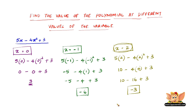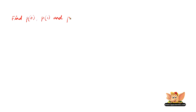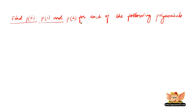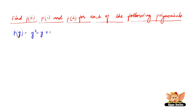Now let us do some more problems based on the same concept, but with the question rephrased. Find p of 0, p of 1, and p of 2 for each of the following polynomials. We have a set of algebraic expressions for which we need to find the values when the variables are substituted with different numbers. We have p of y equals y squared minus y plus 1. When p of y is y squared minus y plus 1, what will be p of 0?